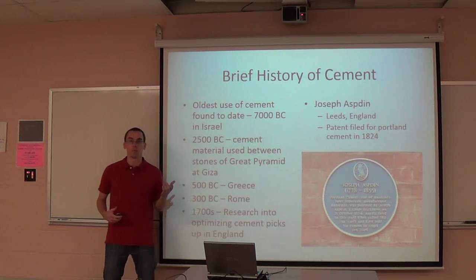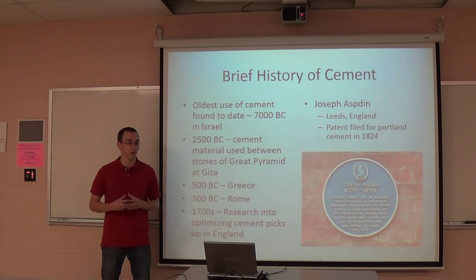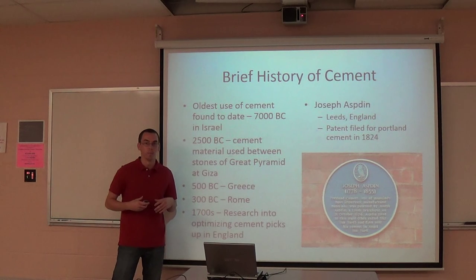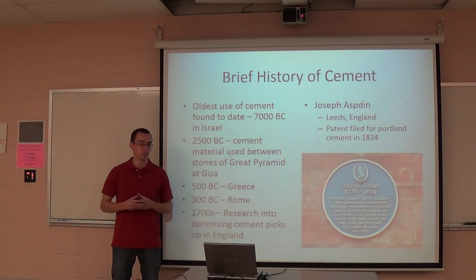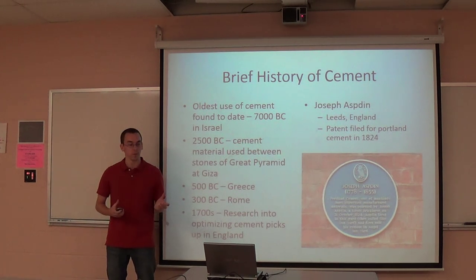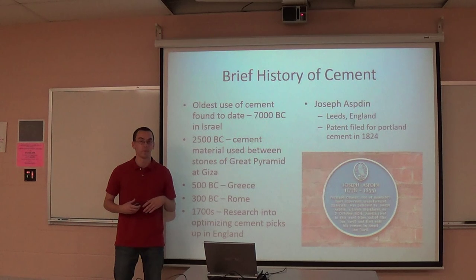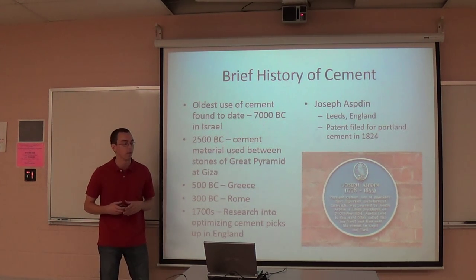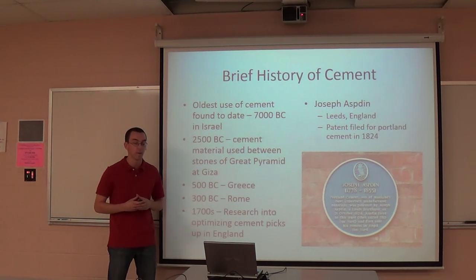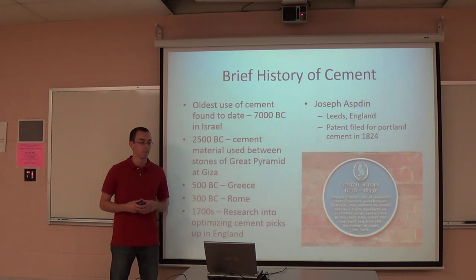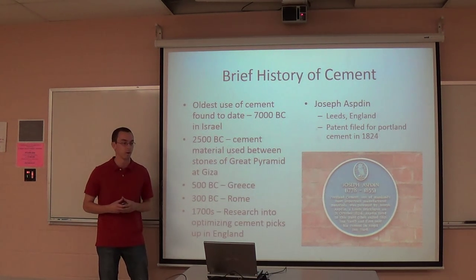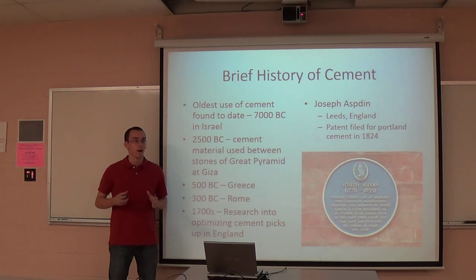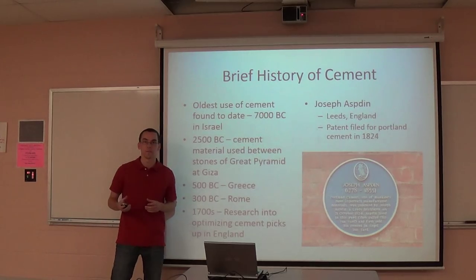Since cement is such an important ingredient in concrete, I want to go into a little more detail about it. The oldest use of cement was found in Israel — it dates back to about 7,000 B.C., and it was a concrete floor slab that used a lime-based cement. The Great Pyramid at Giza also used a lime-based mortar to hold together the stones of the pyramid. The Greeks and Romans also used lime-based cements, and the Romans actually added volcanic ash to the lime base,